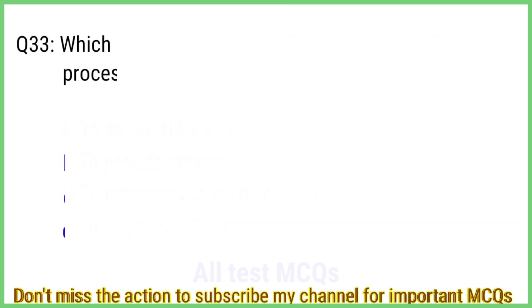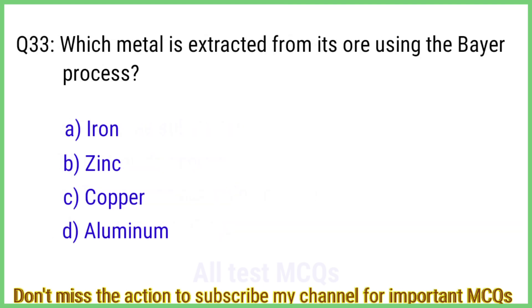Question number 33. Which metal is extracted from its ore using the Bayer process? The right answer is option D: Aluminium.